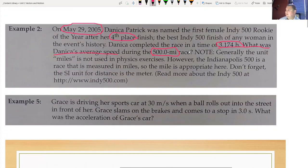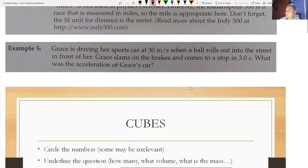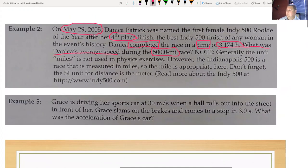You'll see there's a note down below that we don't try, we try not to use miles in physics, but here's the question. Note generally the unit miles is not used in physics exercises. However, the Indianapolis 500 is a race that is measured in miles, so the mile is more appropriate here. Okay. So we've circled all the numbers we could circle, right? So what else are we supposed to do? Well, we're supposed to underline the question. So what's the question here? What was Danica's average speed during the 500 mile race? Box keywords. Are there any other keywords in here? Well, I mean, we've got time, right? I don't see any other keywords. Do you? Maybe completed could be a keyword. So you know that it's finished. Eliminate extraneous information. So did we need the date? Did we need to know her finishing place? No.